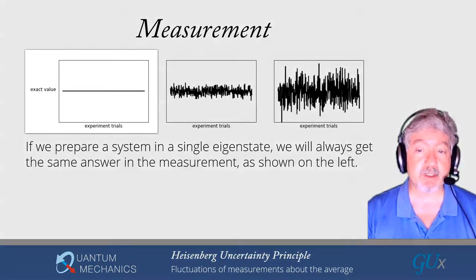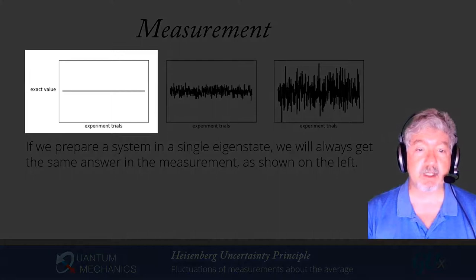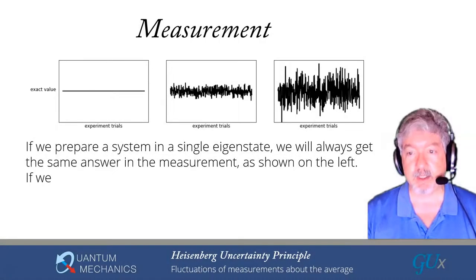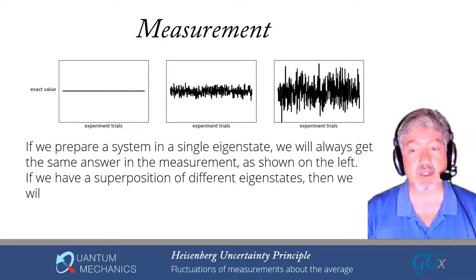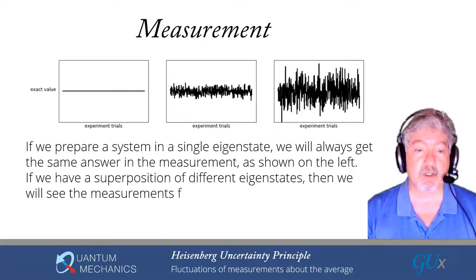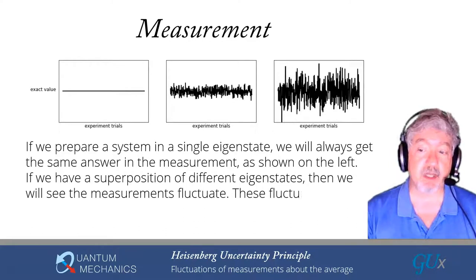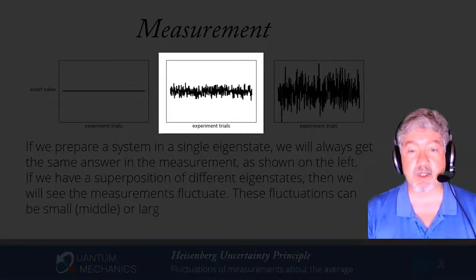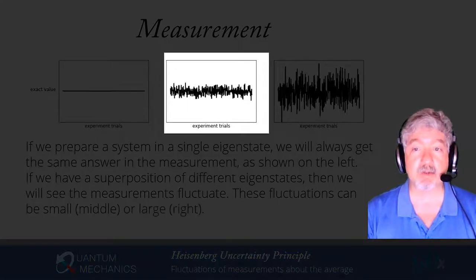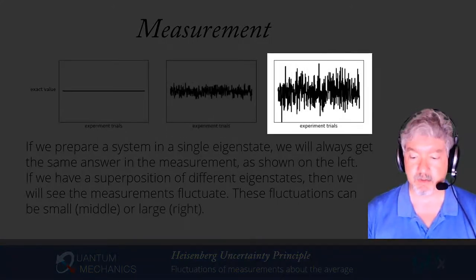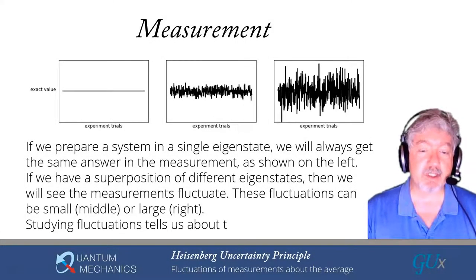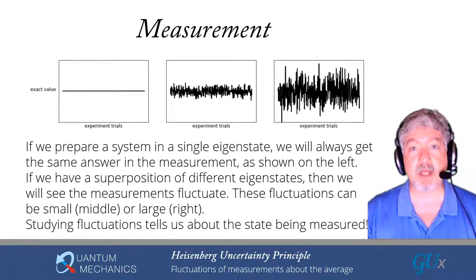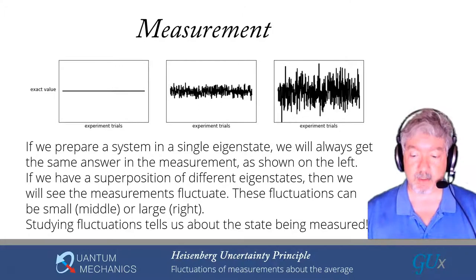If we prepare a system in a single eigenstate, we always get the same answer in the measurement, and that's shown on the left. If the quantum state is in a superposition of different states, then we'll get one value during a measurement and another value and so forth. We'll see more fluctuations, and the fluctuations can be small as shown in the middle or large as shown on the right. Studying these fluctuations tells us information about the state being measured.